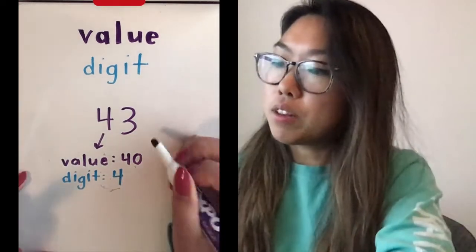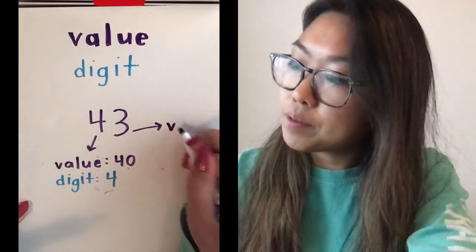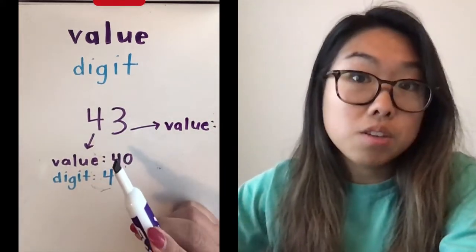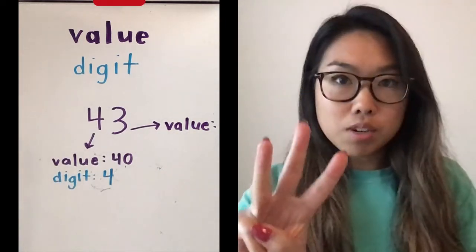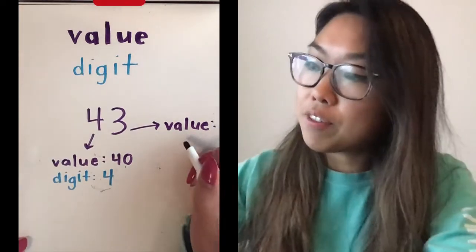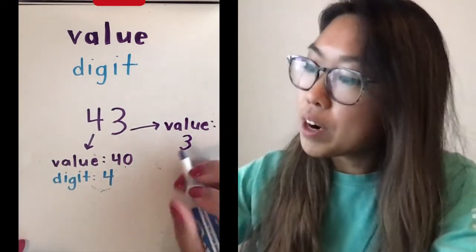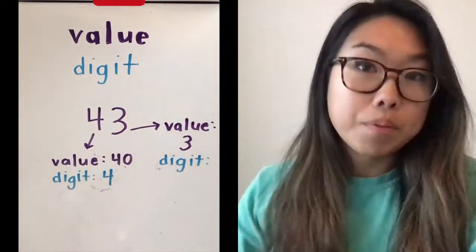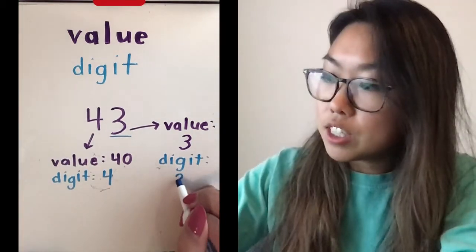So let's think about three. What's the value of the three? This digit is in the ones place. So if I have three in the ones place, I count by ones: one, two, three. That means the value of the three is just three, because it's three ones. When I think about the digit, I need to think: what's the number? The number in this place value is three, so the digit is three.